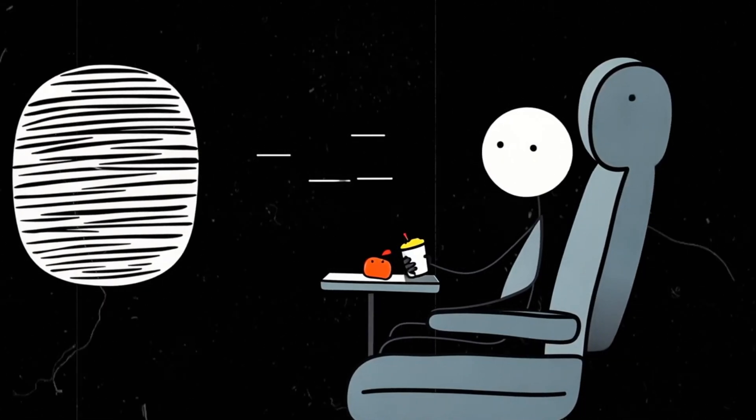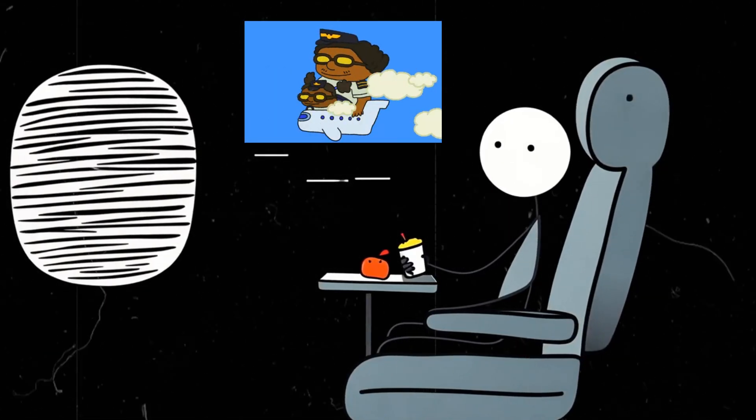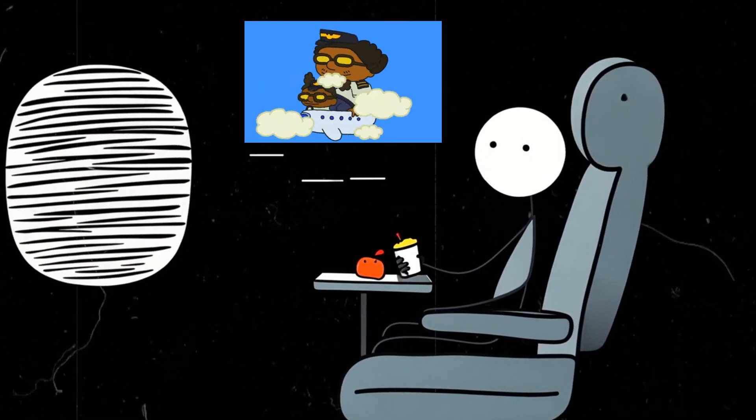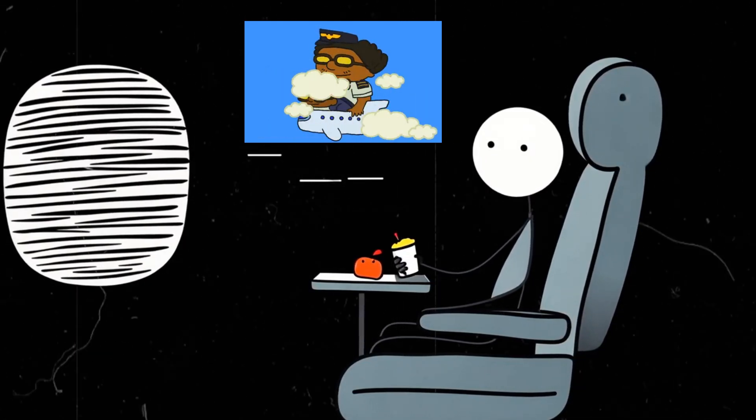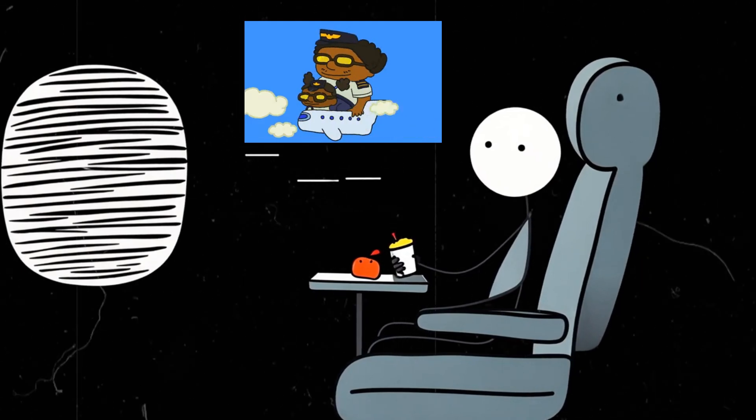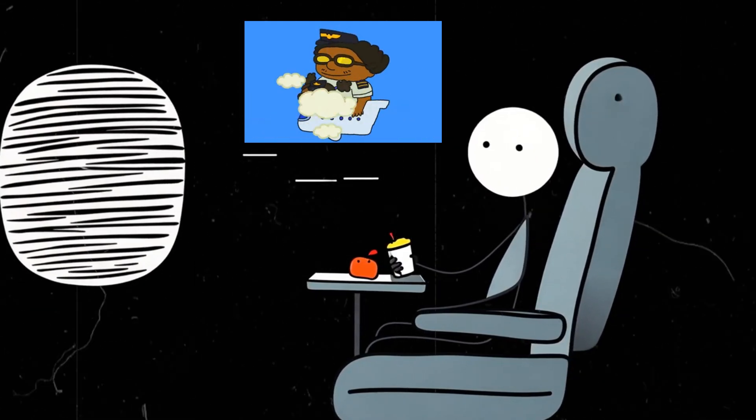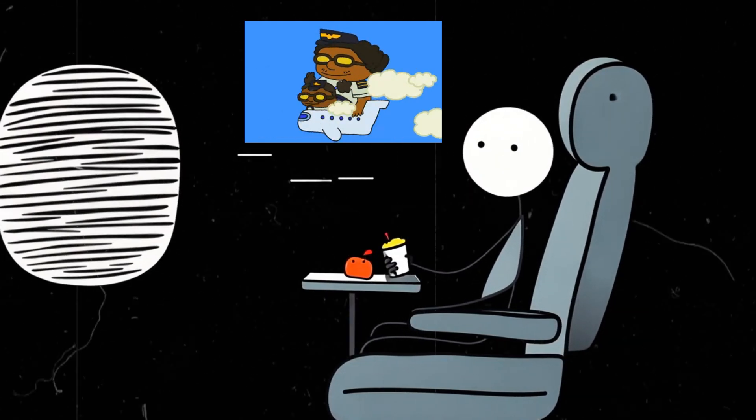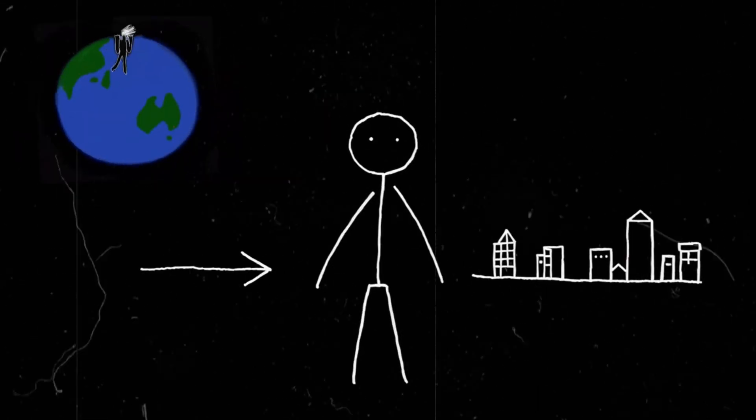When you're on a plane flying at 900 kilometers per hour, 560 miles per hour, you don't feel like you're moving because everything around you—your seat, the tray table, your bag of overpriced airport snacks—is moving with you. Earth works the same way.